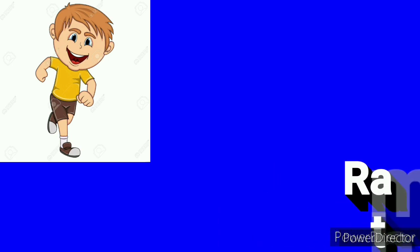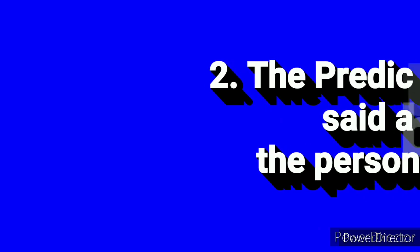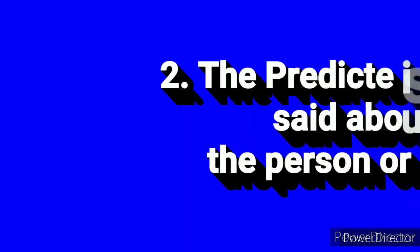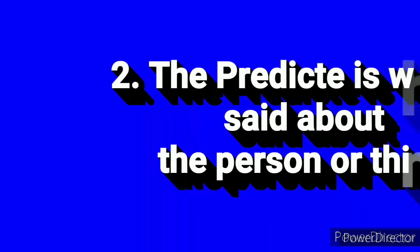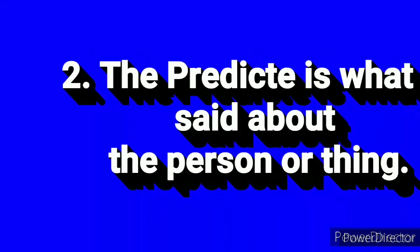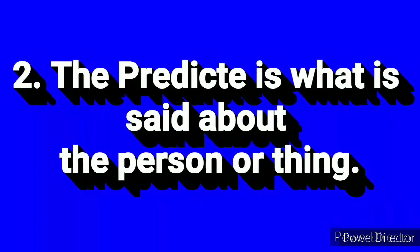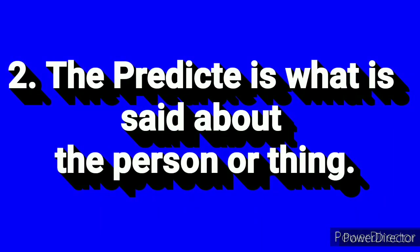Let's proceed with the predicate. The predicate is what is said about the person or the thing — what is happening about the subject.